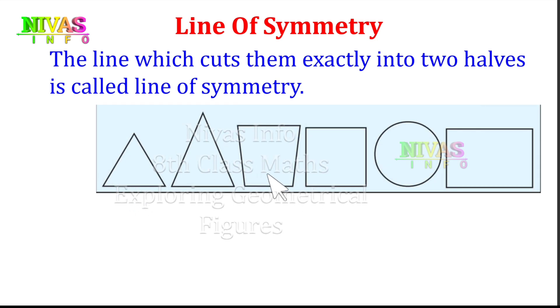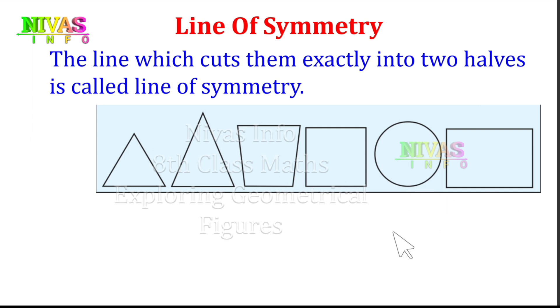Examples of shapes with a line of symmetry include: equilateral triangle, isosceles triangle, trapezium, square, circle, and rectangle. This line is called the line of symmetry.